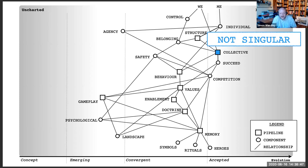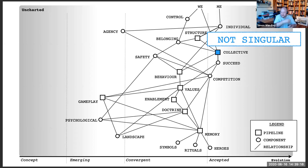The first thing to note is there's no such thing as one culture — it's not singular. Because we all belong to many collectives, for everyone to have the same culture they'd have to belong to exactly the same collectives and have exactly the same memory. That would not be possible. You're never talking about one culture; there are many cultures in any organization.